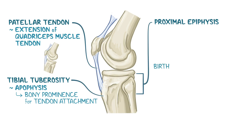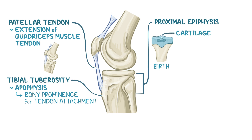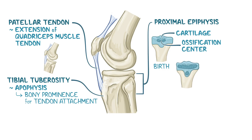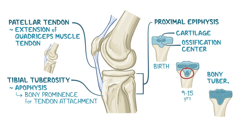At birth, the proximal epiphysis consists of cartilage, but it contains an ossification center inside. This ossification center begins to ossify, or turn to bone, between the age of 9 and 15, and becomes a bony tuberosity around the age of 18.